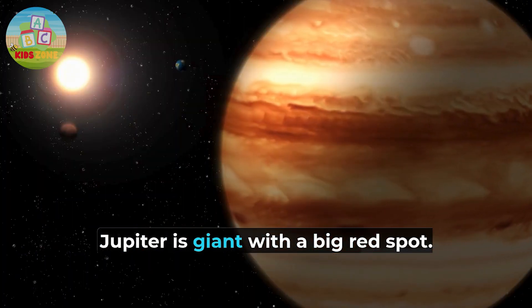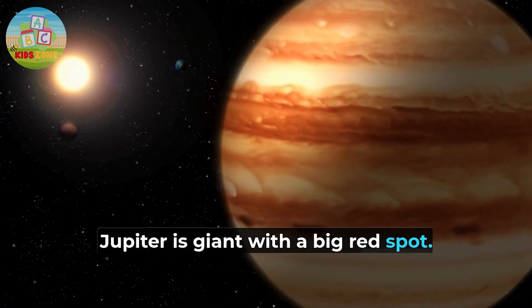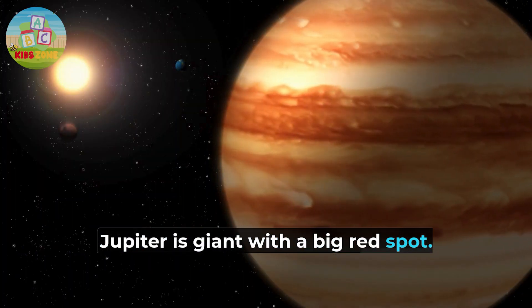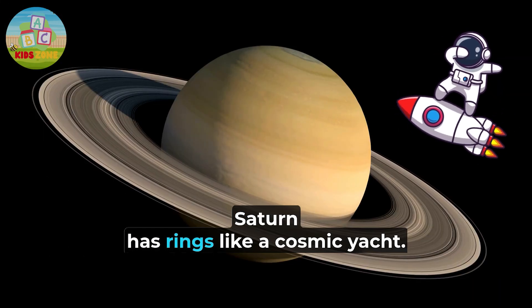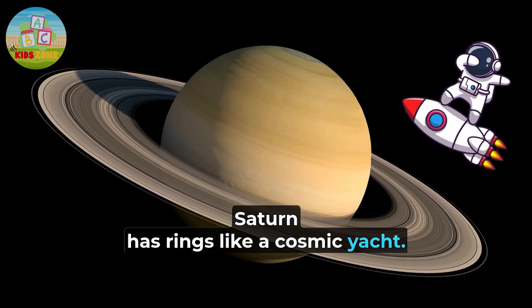Jupiter is giant with a big red spot. Saturn has rings like a cosmic yacht.